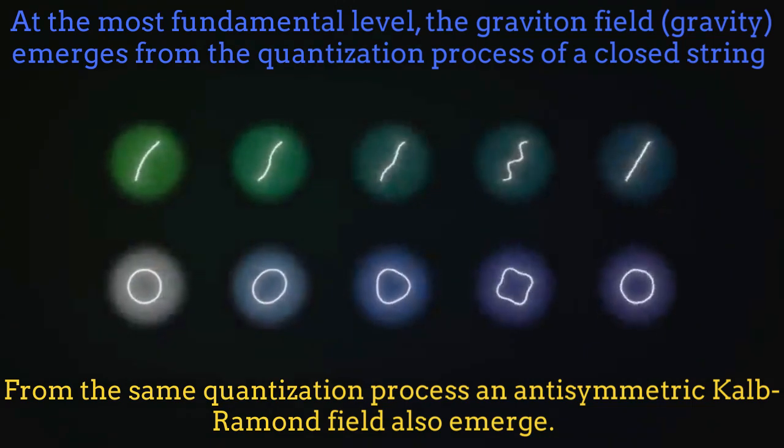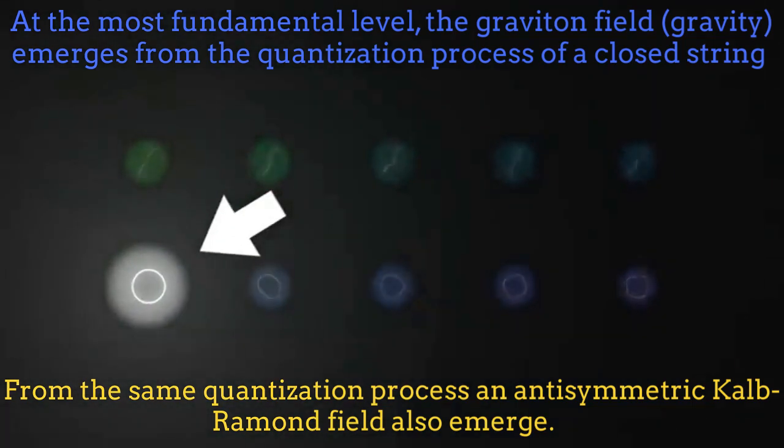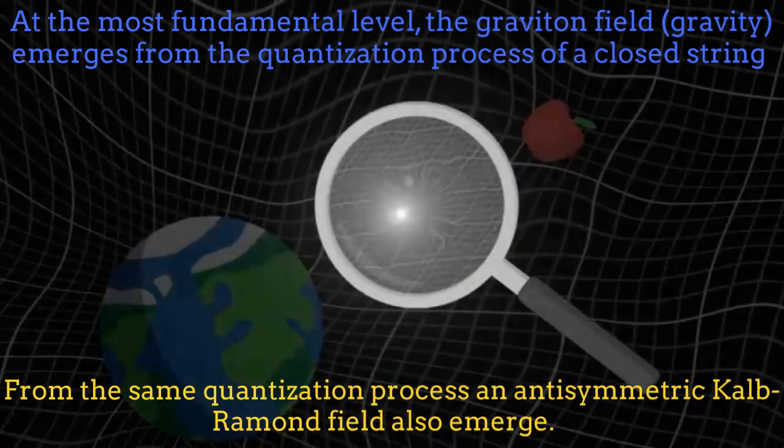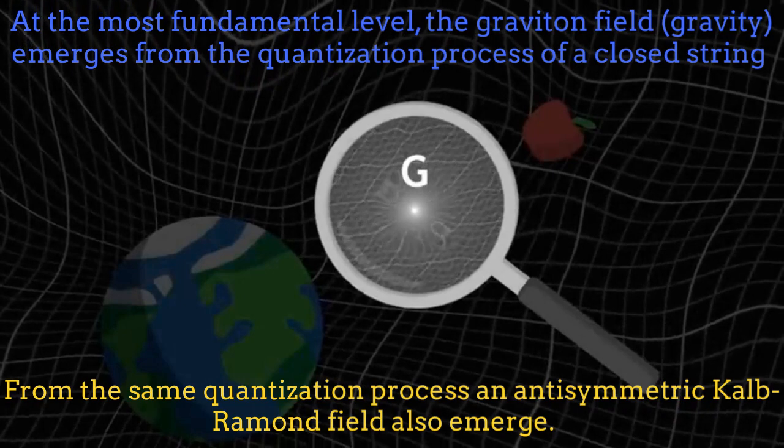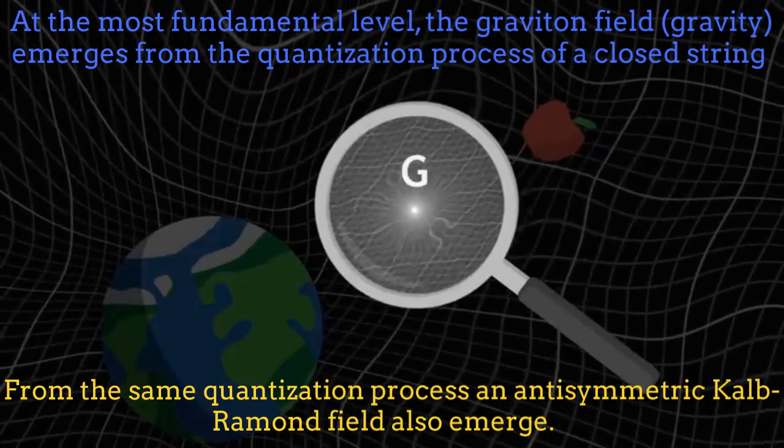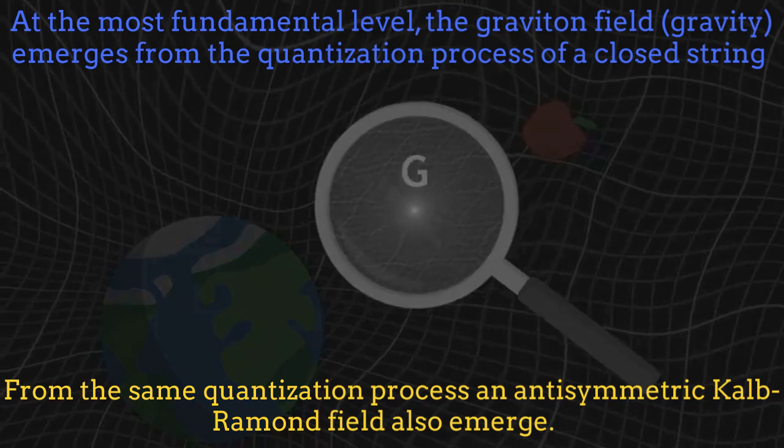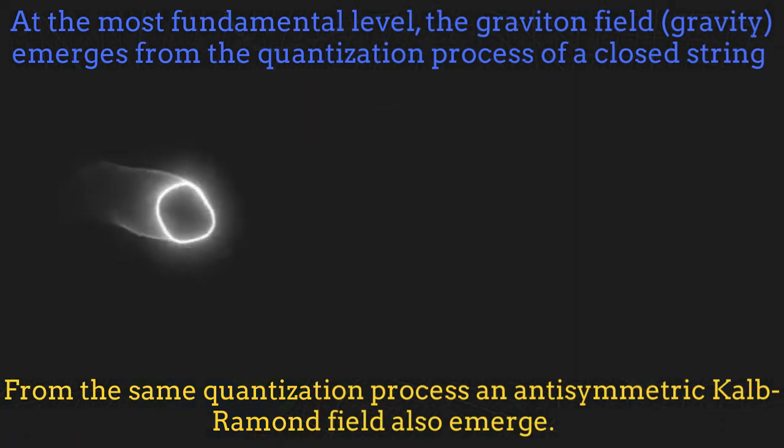When we quantize a closed string, not only massless graviton fields emerge. From the same process, an antisymmetric tensor field also emerges, which, although it looks similar to the Maxwell field from electrodynamics, is in a sense different.